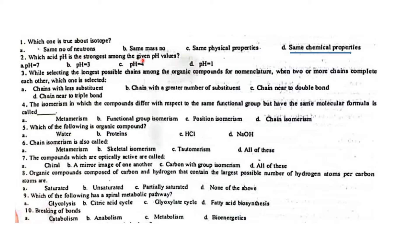Which acid pH is the strongest among the given pH values? The lower the pH value, the stronger the acid. pH 1 has the strongest, most acidic nature.